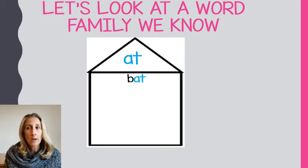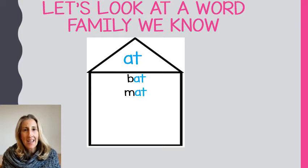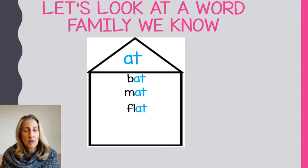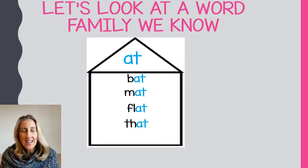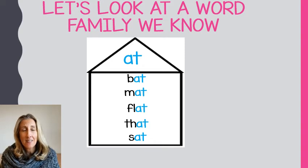Let's start with the first one: 'b' — 'at' — 'bat.' Let's look at the second one: 'm' — 'at' — 'mat.' Let's look at the next one: 'fl' — 'at' — 'flat.' Then 'v' — 'at' — 'vat.' And the last one: 's' — 'at' — 'sat.' All of those words have the word family 'at' in them.